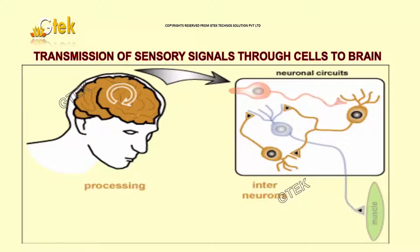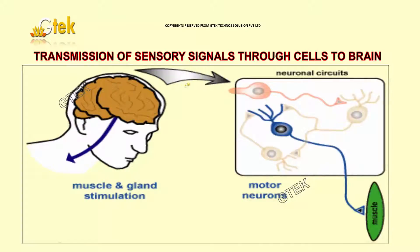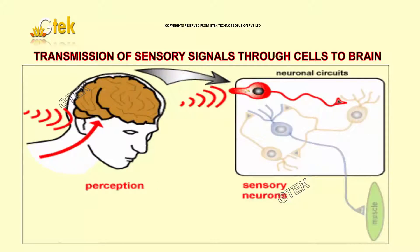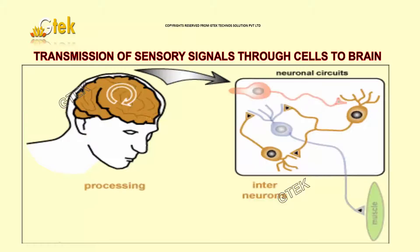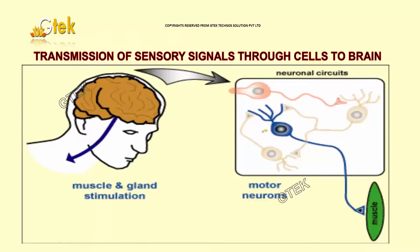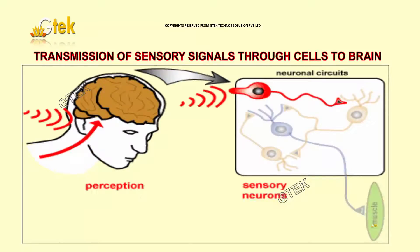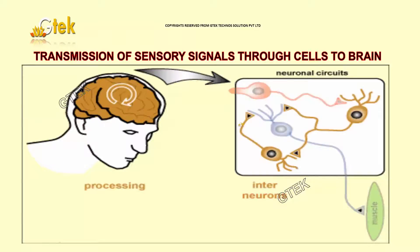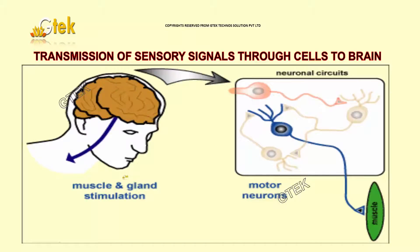You are able to see a picture indicating a 2D transmission of sensory signals through cells to brain. You are able to see the sensory neurons — it is processing. And these are internal neurons. Here are motor neurons to the muscles. Perception: sensory neuron. Processing: inter neuron. And the muscles and gland stimulation: motor neurons.